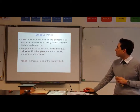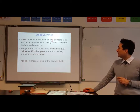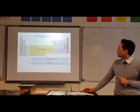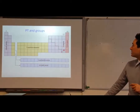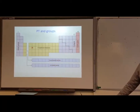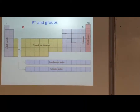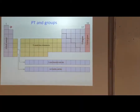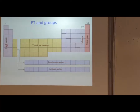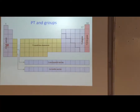Groups are columns, periods are rows. You're also meant to know the labeling: alkaline metals, transition metals, halogens, noble gases. I'm going to jump a little bit because you're going to have to memorize some equations. Alkali means when it reacts with water it forms an alkali solution, and the opposite would be the acid side.